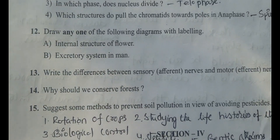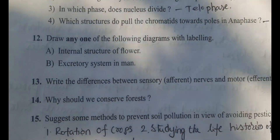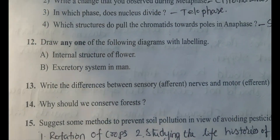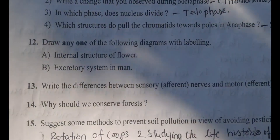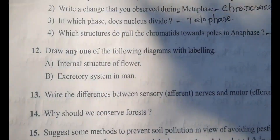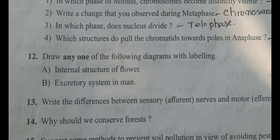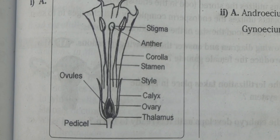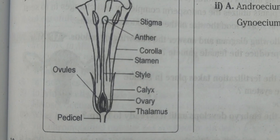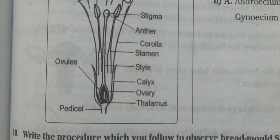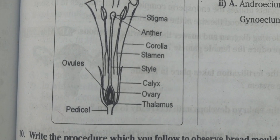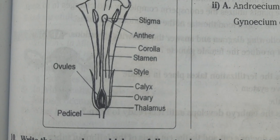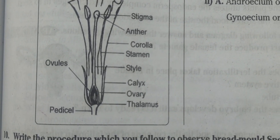Twelfth question: draw any one of the following diagrams with labeling. Option A: internal structure of a flower. Label four parts such as stigma, anther, corolla, stamen, style, calyx, ovary, ovules, and pedicel.